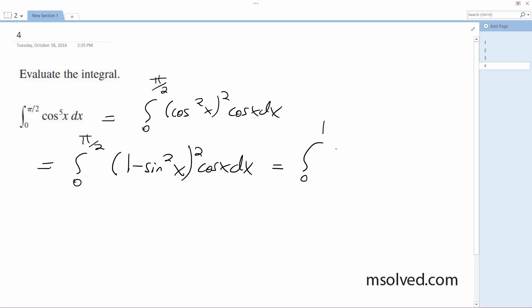U-substitution, 0 to 1. So we have 1 minus u squared, squared du.